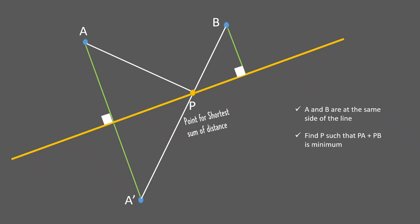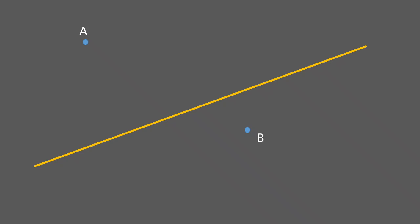That's the solution for two points on the same side of the line. As an exercise, if you understood this video, try figuring out the case when A and B are on opposite sides of the line — find point P on the line such that PA plus PB is minimum. Share your answer and experience in the comments. Thanks for watching.